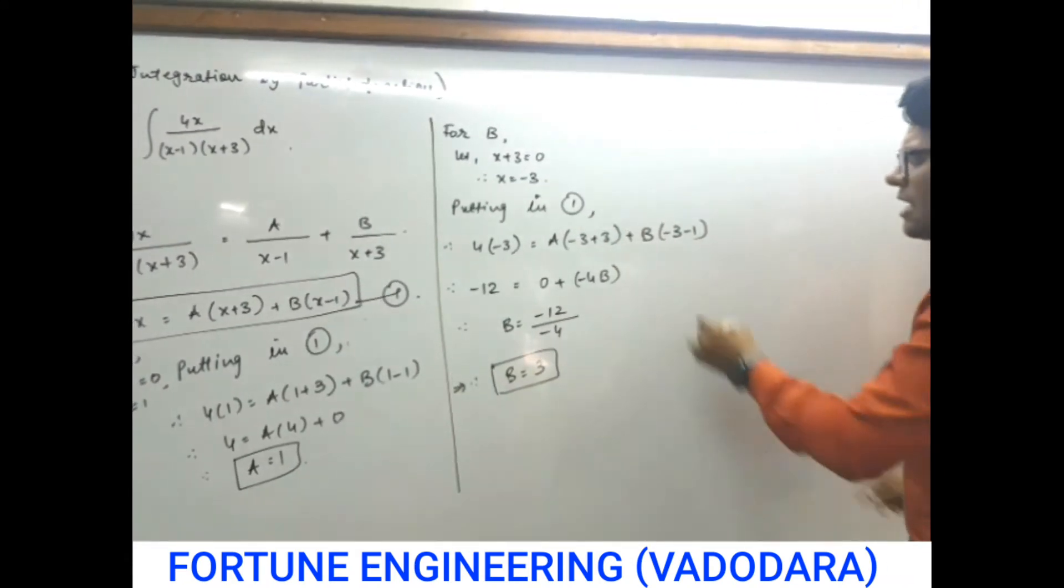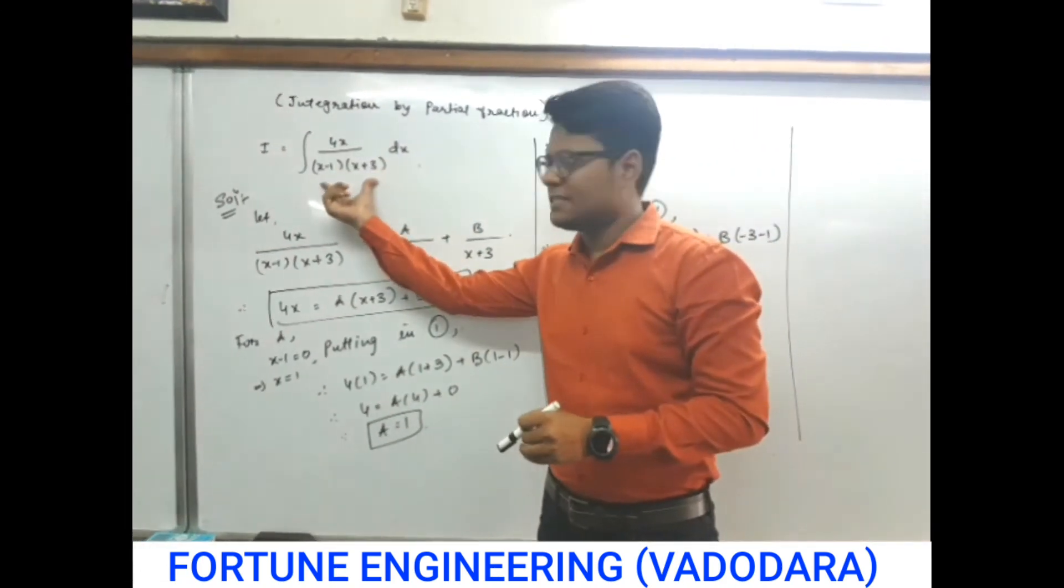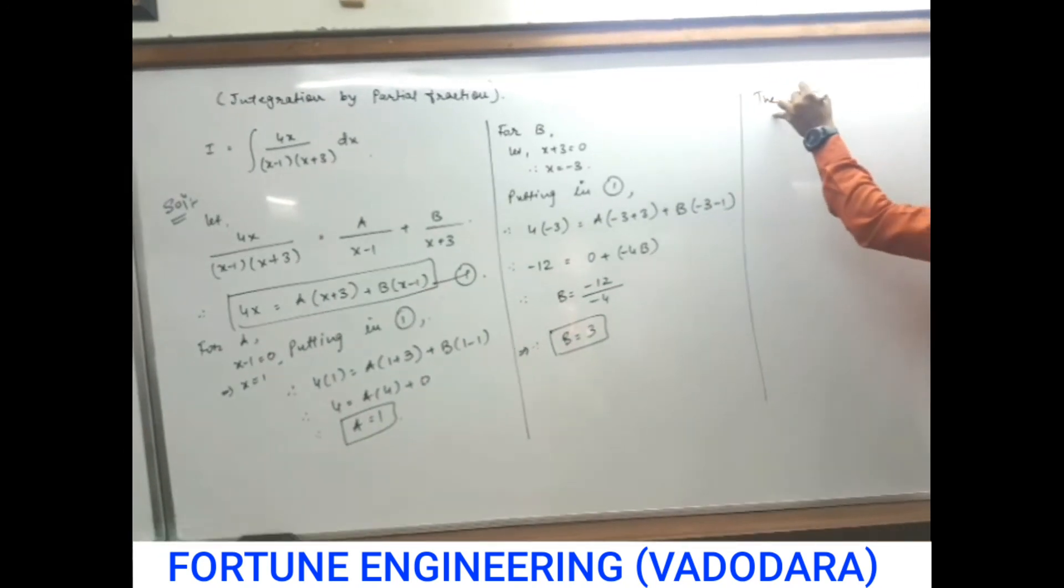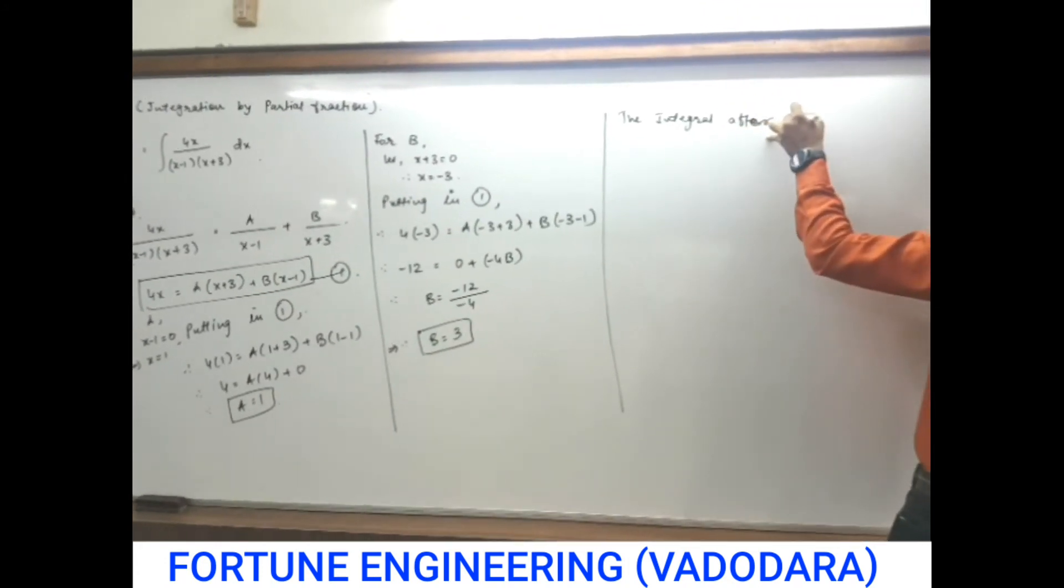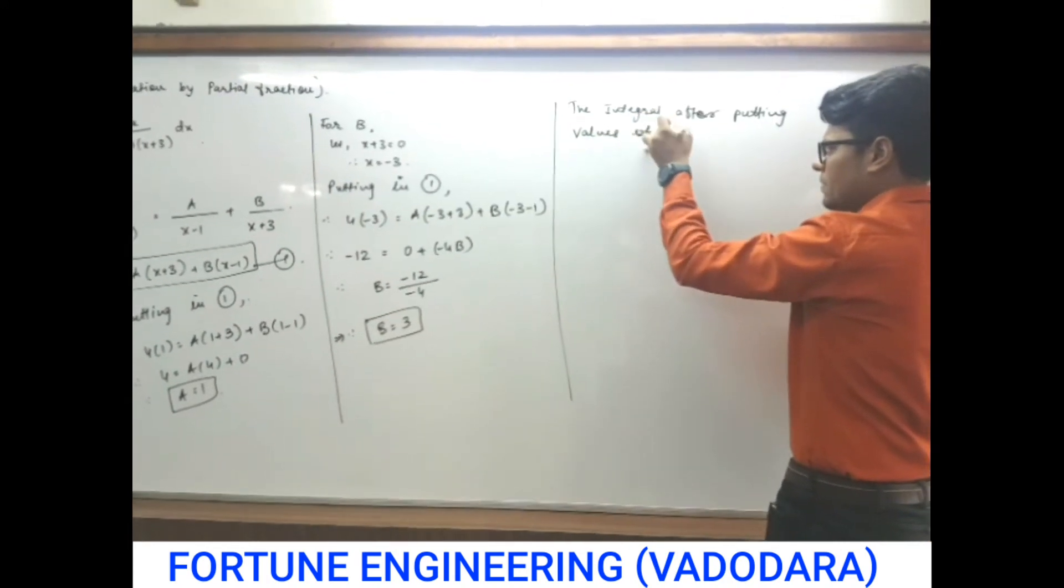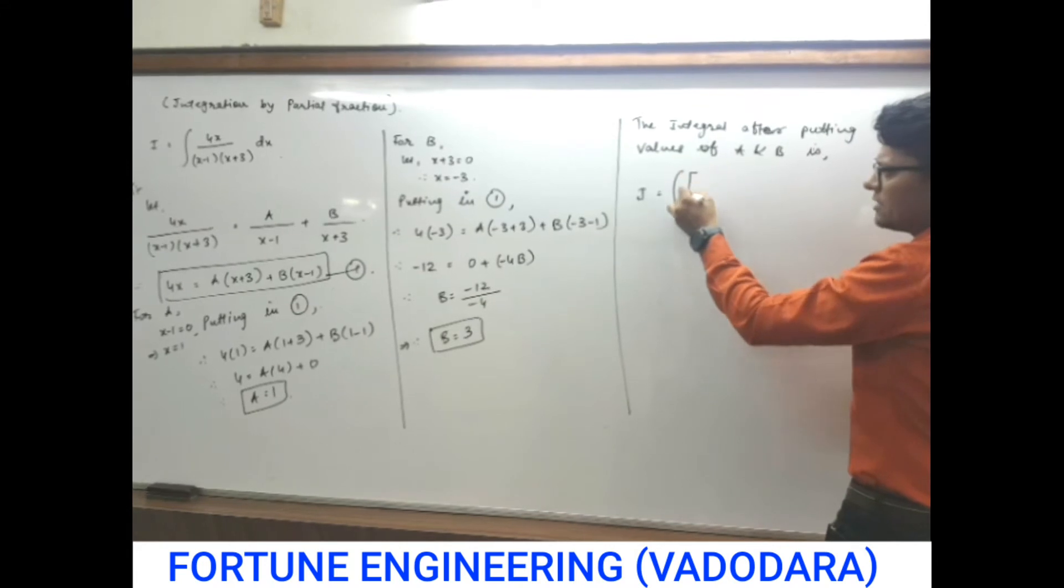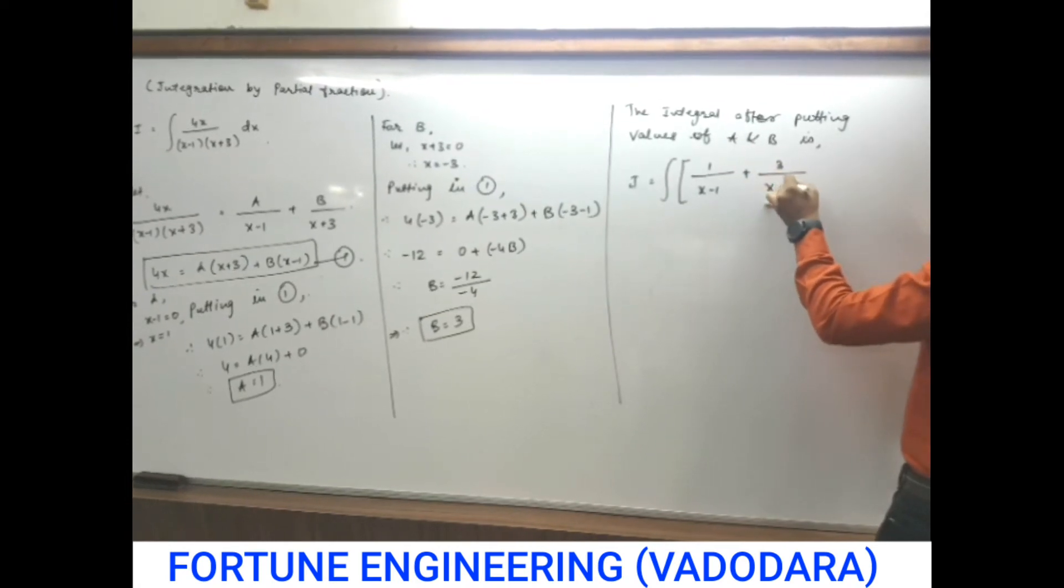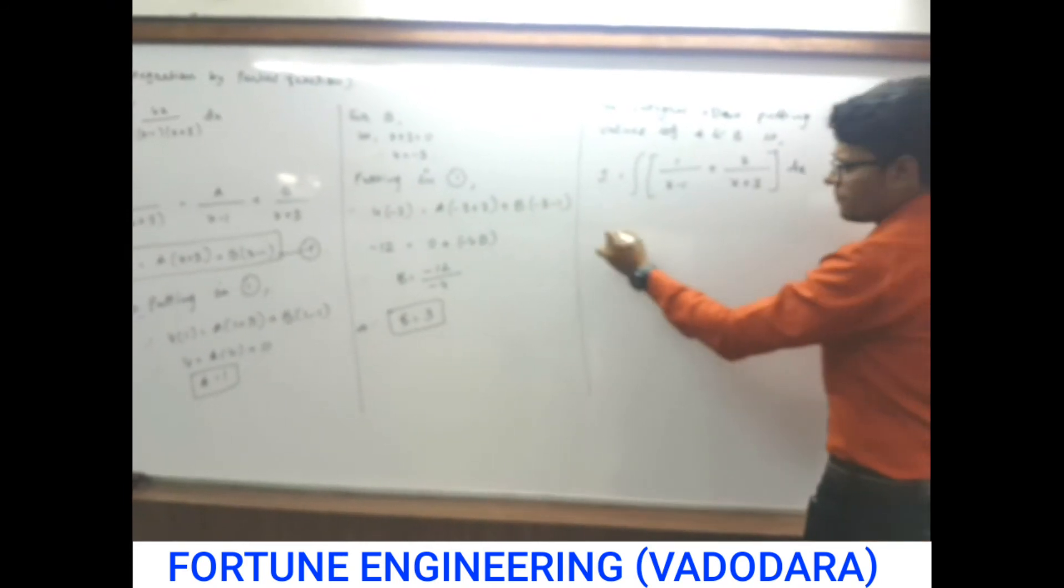Ultimately, we have found both the values of a and b. Now, we want to find the integration of this. The integral after putting values of a and b is I, for our integration a. So what is the value of a? That is 1. So 1 upon x minus 1 plus b. That is 3 upon x plus 3. And dx is there, which shows that integration is with respect to x. Now, do the integration.